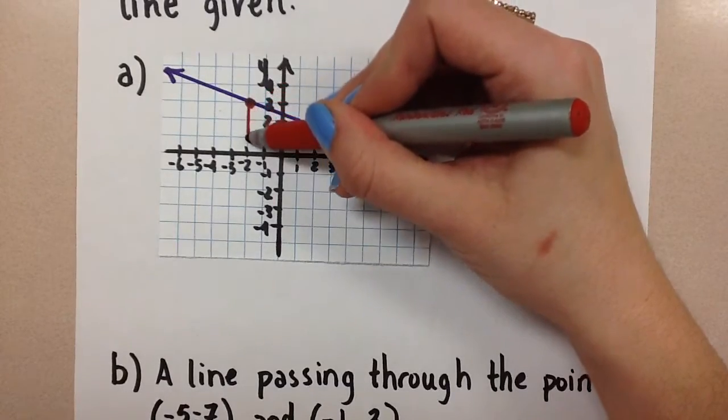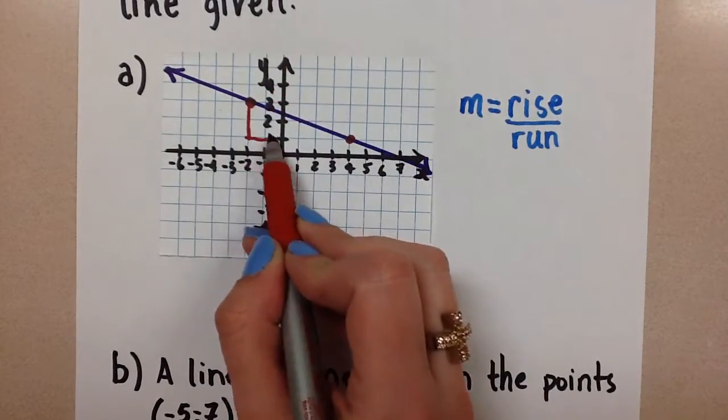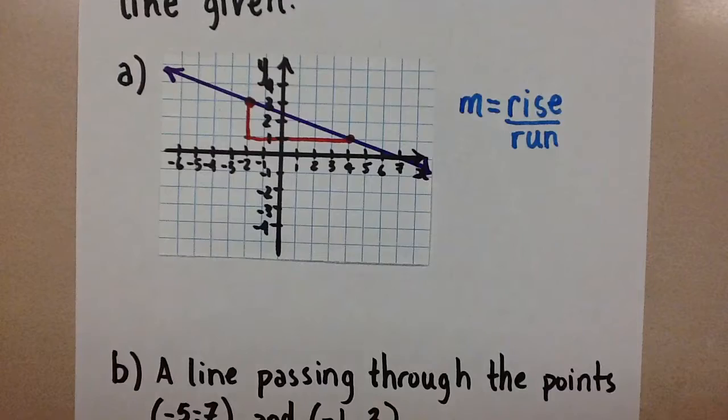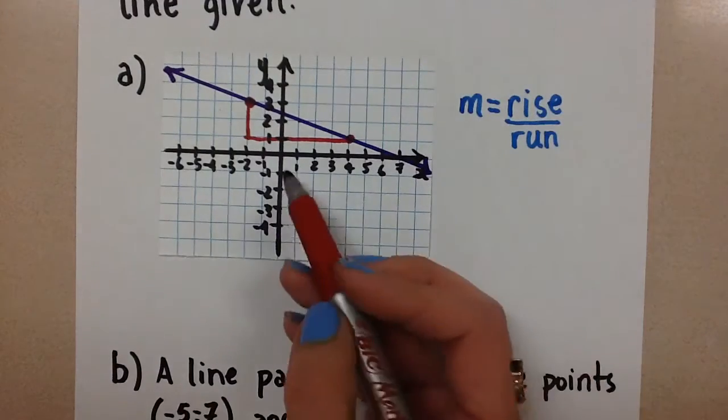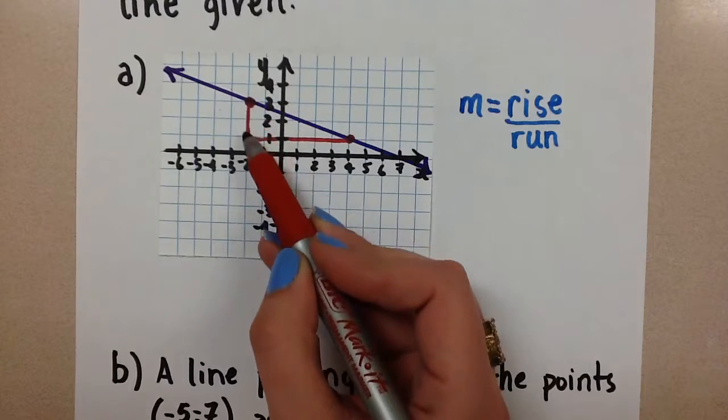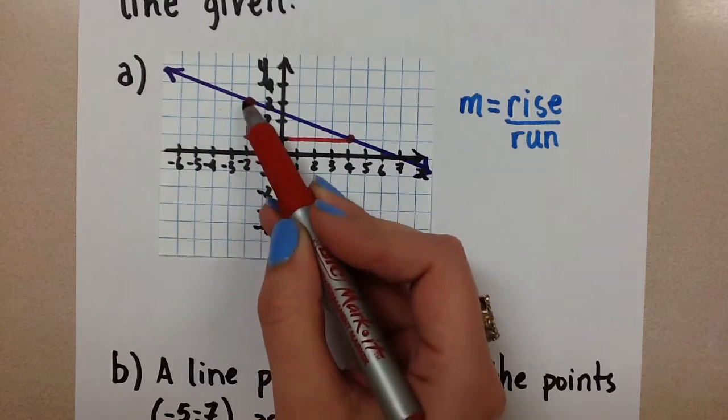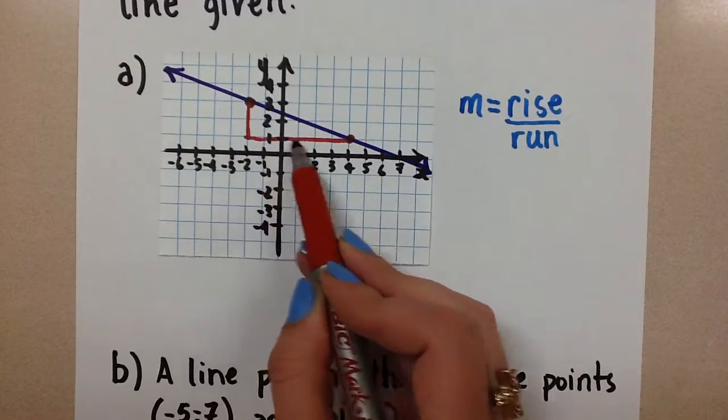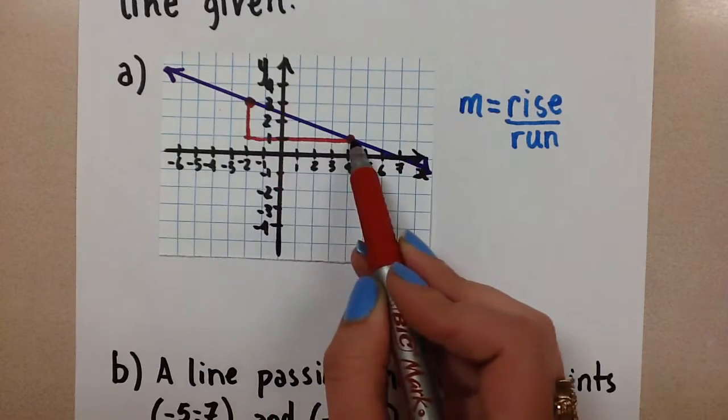So between those two points I'm going to draw a right angle triangle. We call this the right triangle that we use for calculating slope. Now you can see clearly the rise, that's the vertical distance there of the line, and then the run of the line which is the horizontal distance.